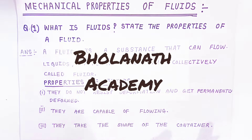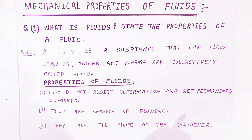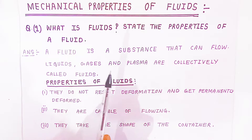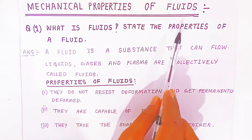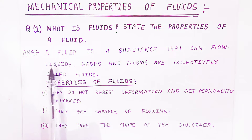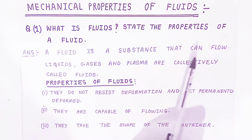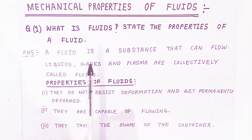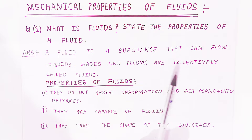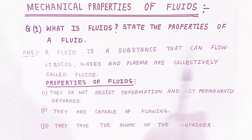Hello students, once again welcome to Bhunanath Academy. In this video we are going to see the mechanical properties of fluids. To understand this, you should know what fluids are. Fluid is a substance that can flow. For example, liquids, gases, and plasma — except solids, all these states can flow. So liquids, gases, and plasma are collectively called fluids.